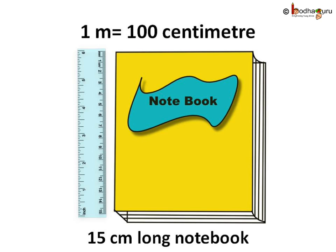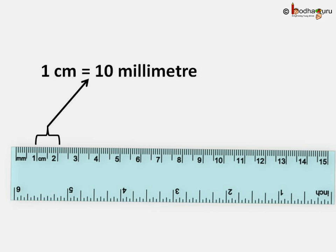We use centimeter to measure small lengths, like the length of a book. There is a smaller unit than centimeter too — that is millimeter. How big is a millimeter? It is very small. 1 cm is equal to 10 millimeters. Look at the ruler — 1 cm is divided into 10 equal parts.